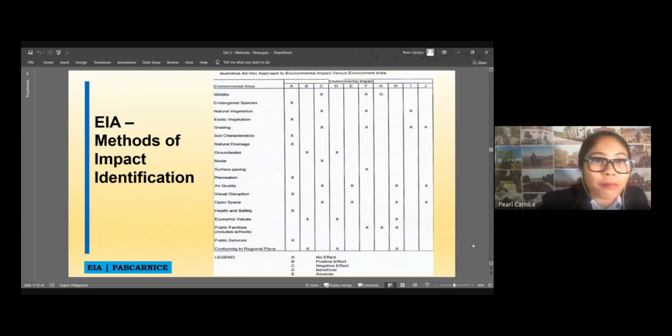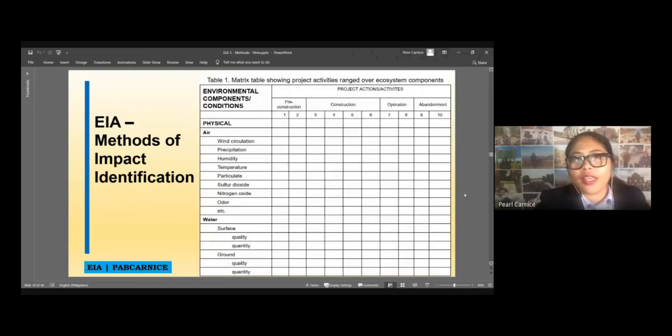So, this is an example of a checklist. This is, for example, wildlife. We have A, B, C, D, F to J. So, for example, A means no effect. B means positive effect. C means negative effect. D, beneficial. E, adverse, and so on and so forth.